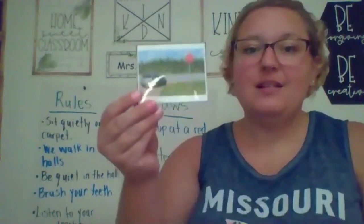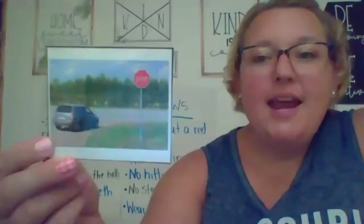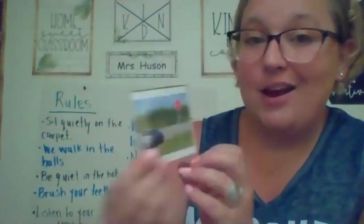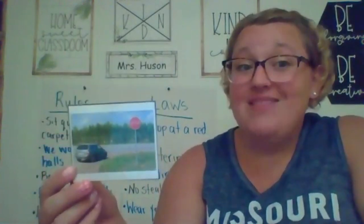My first picture is a car, and if you look very closely, you can see they're driving on the road and there's a stop sign. Does it look like they stopped at the stop sign, or did they keep going? I'll give you a hint — if you look at the lights on the back, you can tell they are not on. Those are called brake lights, and the brake lights not being on tells me they didn't stop at that stop sign. Did they follow the law or did they break the law?